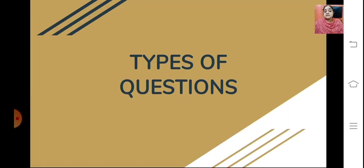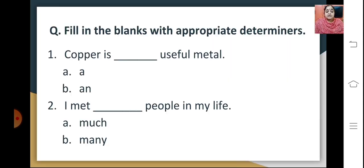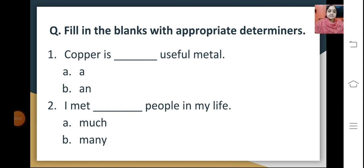These were the different types of determiners, which you have learnt earlier — this is a revision. Now let's go through the types of exam questions for determiners. The first kind is fill in the blanks with appropriate determiners. For example, 'Copper is dash useful metal' — options are a and an — the answer is 'Copper is a useful metal.' And 'I met dash people in my life' — options are many or much — the answer is many.